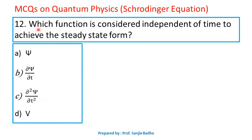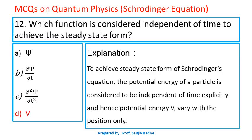Question number 12. Which function is considered independent of time to achieve the steady state form? Options are wave function ψ, ∂ψ/∂t, ∂²ψ/∂t², or potential energy V. To achieve the steady state form of Schrödinger's equation, the potential energy of the particle is considered to be independent of time explicitly, and hence the potential energy V varies with position only. The correct answer is D — potential energy.